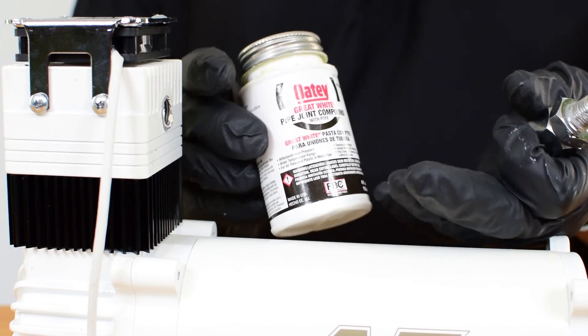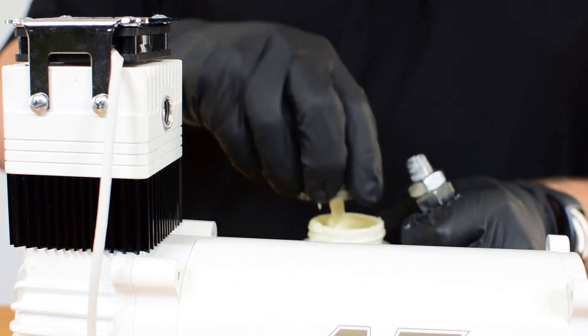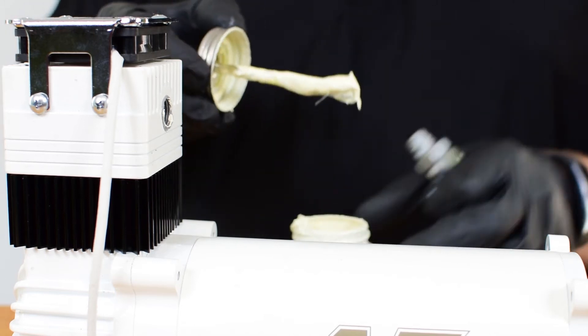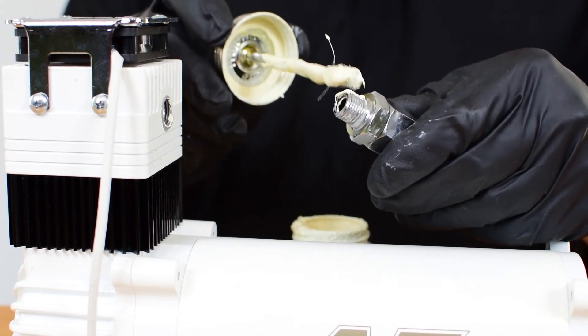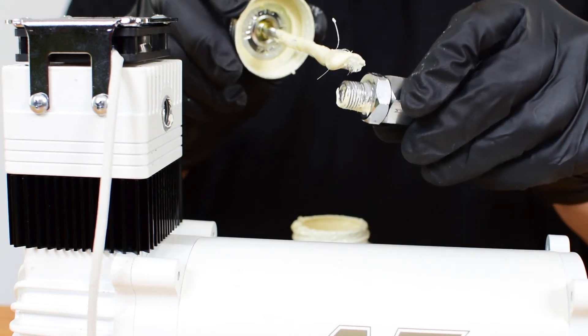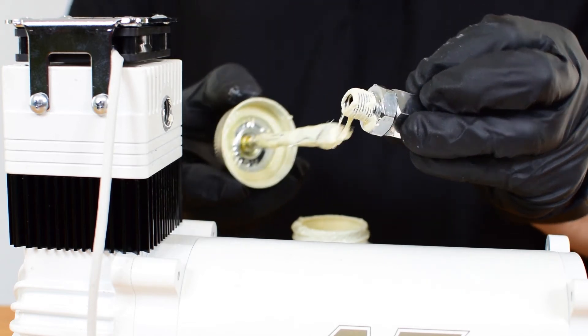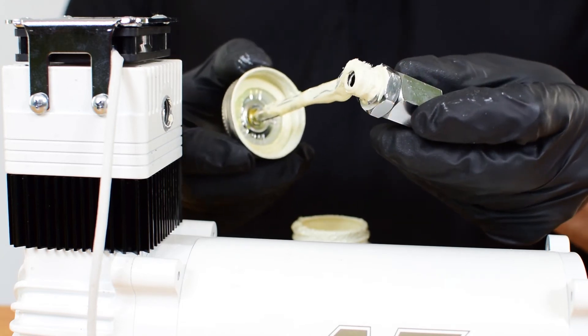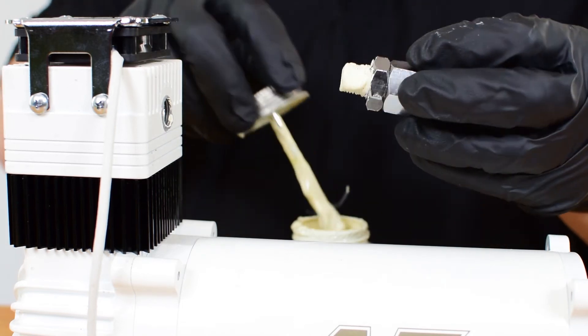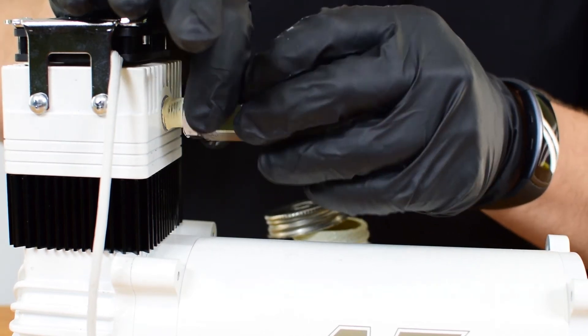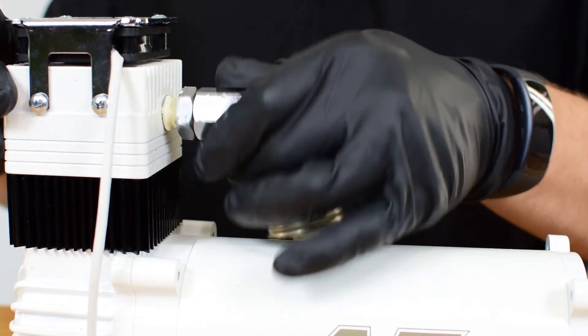When you go to install the check valve back onto the compressor, you want to use the same joint compound or white Teflon tape to apply liberally to the threads before attaching it back to the compressor. And you can go ahead and thread it back onto the compressor. And you want to tighten it down until snug and then a quarter turn.